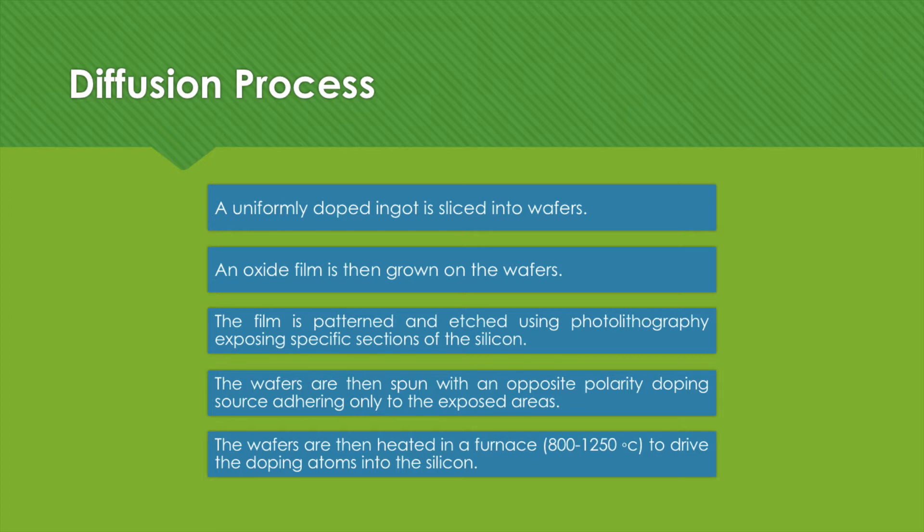Step 4: The wafers are then spun with an opposite polarity doping source adhering only to the exposed areas. Step 5: The wafers are then heated in a furnace to drive the doping atoms into the silicon.